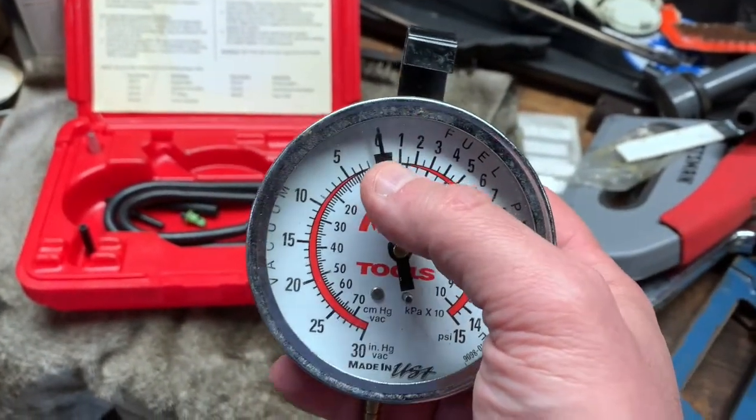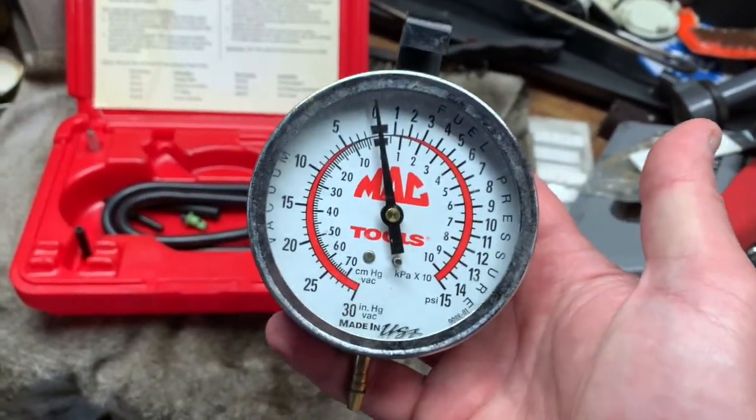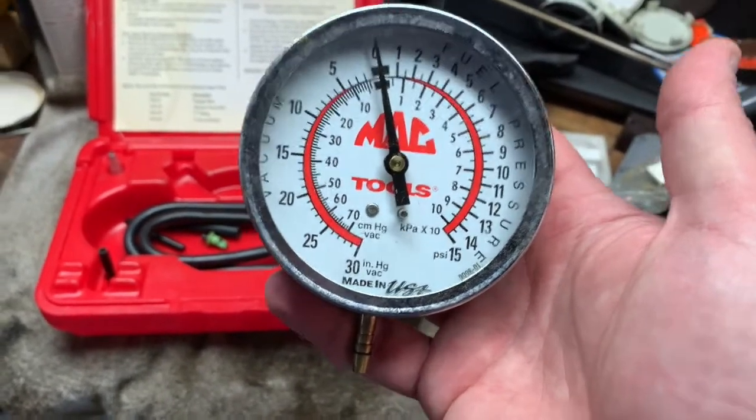We don't know what our pressure is, so we just kind of call it zero because it's what we're used to. But there's actually 14.7 pounds per square inch on top of us, and we would find that out if we went out into outer space.